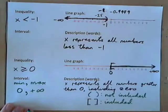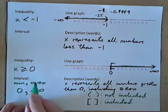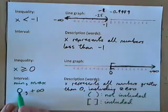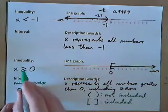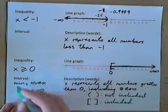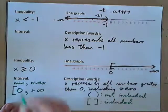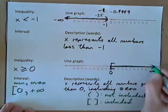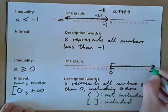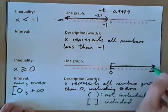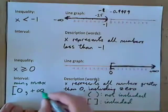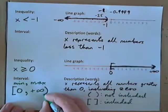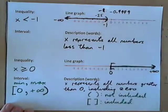So we have 0, comma, positive infinity. Is 0 included? It's greater than or equal to 0, so yes — put a square bracket. Is positive infinity included? We can never actually reach positive infinity, so we can't include it. Beside infinity, we always put a parenthesis, which means not included. Square bracket means included; parenthesis means not included.